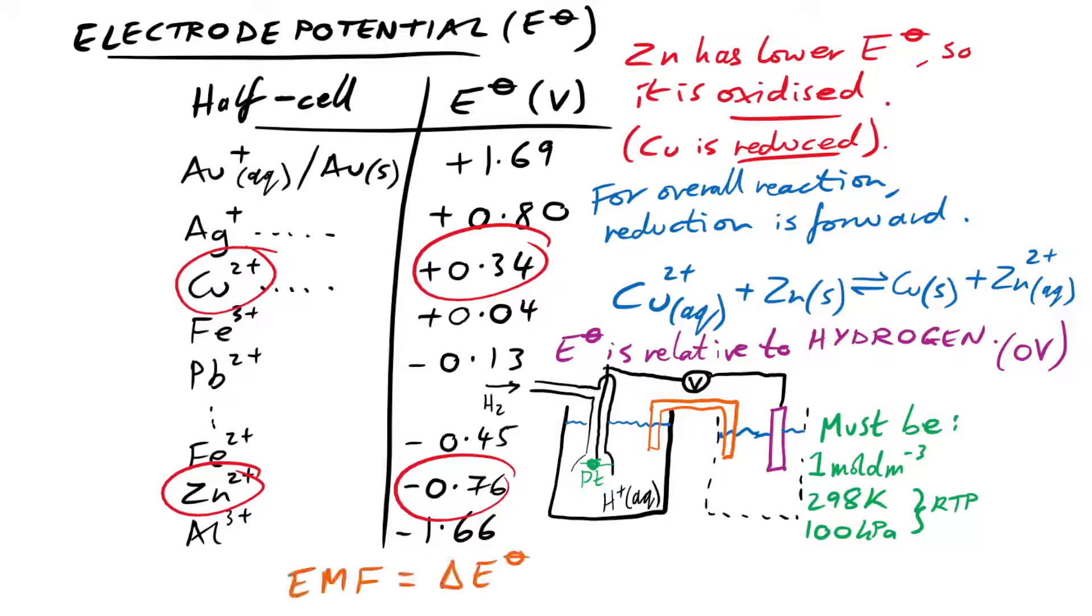To find out the actual EMF produced by an electrochemical cell, we just find the difference in electrode potentials between our two metals. And so therefore, just one take away the other. Of course, one of them might be negative, so just be careful with that.